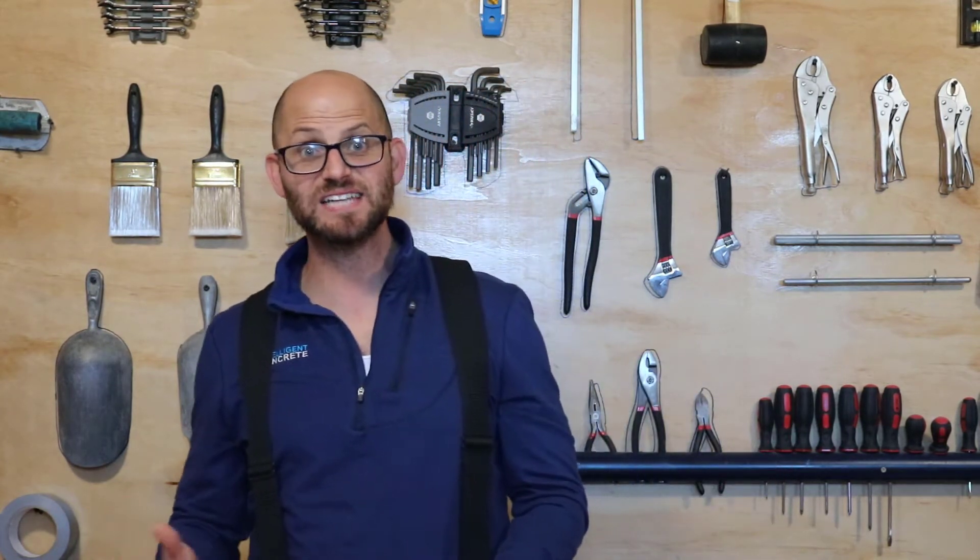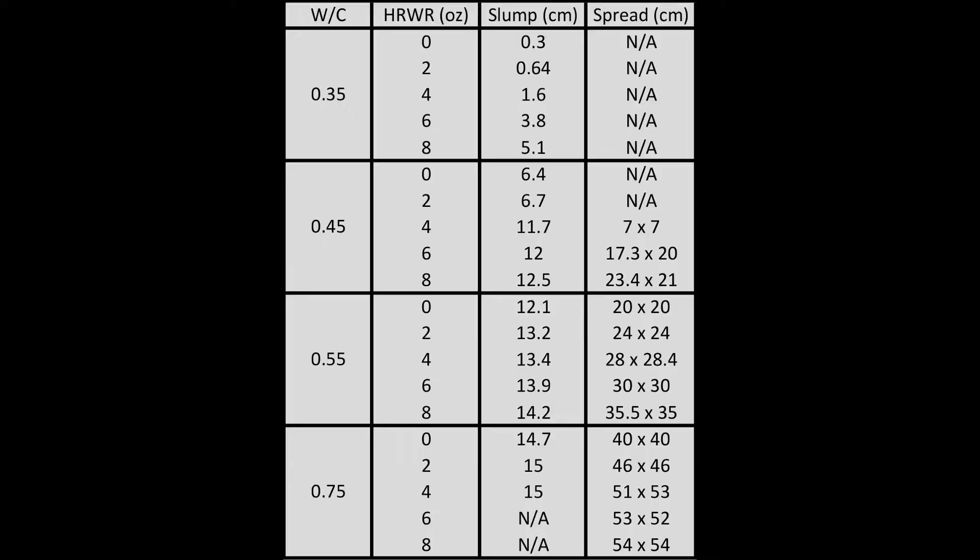We're doing the same thing here but taking it a step further — we wanted to create a relationship between water content, or water-to-cementitious ratio, and the increasing amount of high-range water reducer. We tested four water-cementitious ratios: 0.35, 0.45, 0.55, and 0.75, and we increased our high-range water reducer from zero fluid ounces per hundredweight all the way up to eight fluid ounces per hundredweight.